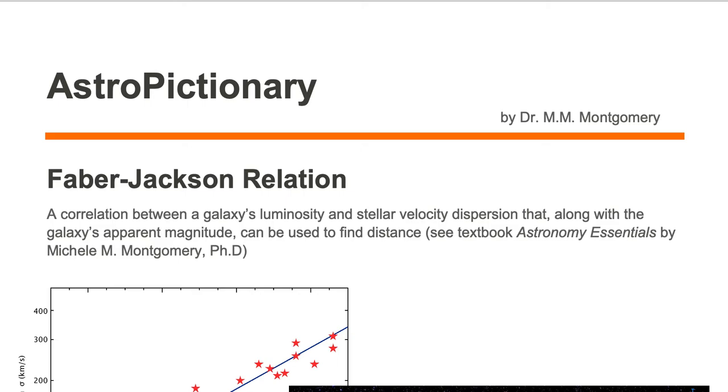The Faber-Jackson relation is a correlation between a galaxy's luminosity and stellar velocity dispersion that, along with a galaxy's apparent magnitude, can be used to find distance.